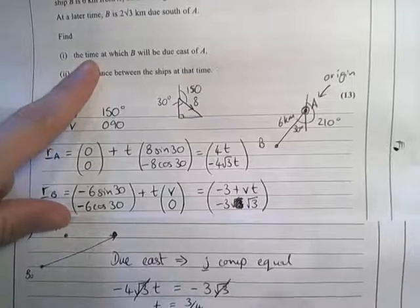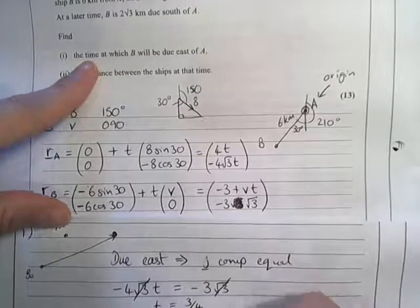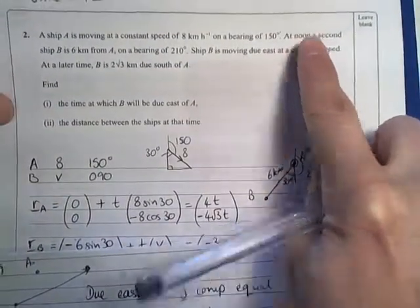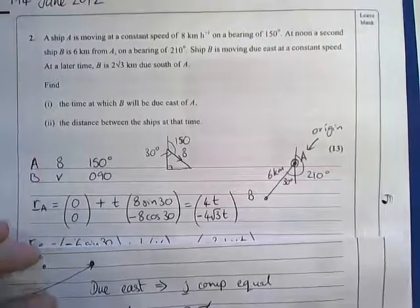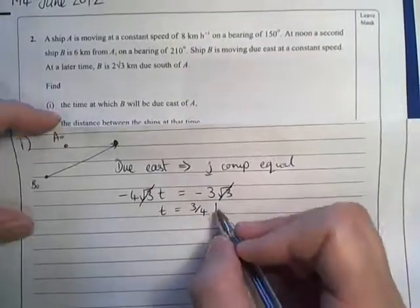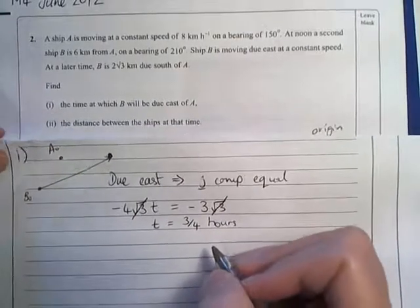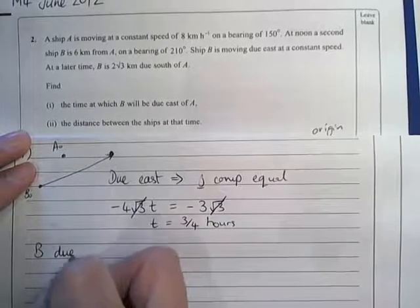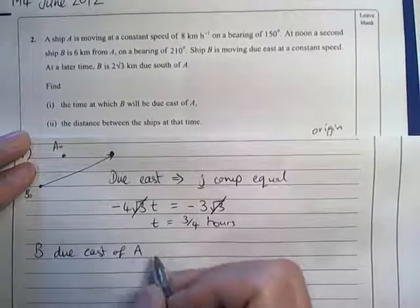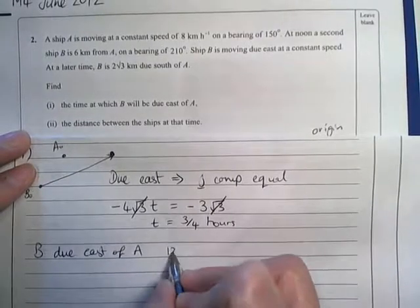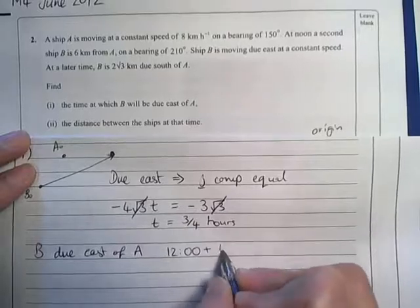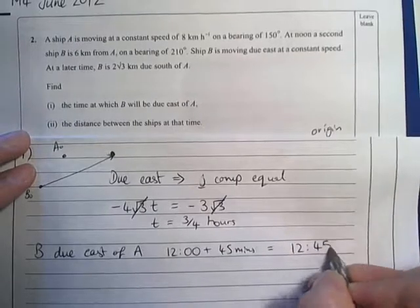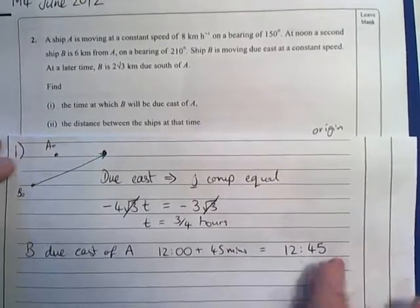Now, they said find the time at which B will be due east of A. They don't want the time as in how much time has passed, they want the time as in something o'clock. Everything in this question began at noon. So therefore, the time at which B will be due east of A is going to be 1200 hours plus 45 minutes, which is 12:45 in 24-hour time.